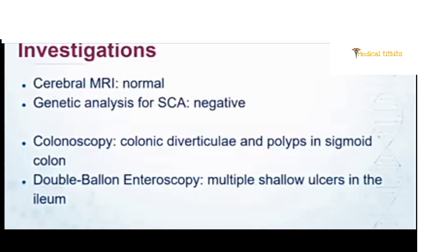Genetic analysis was negative and the cerebellar MRI was entirely normal. We performed a colonoscopy which showed colonic diverticula and benign polyps in the sigmoid colon. We then proceeded to double-balloon enteroscopy, which showed multiple shallow ulcers in the ileum.